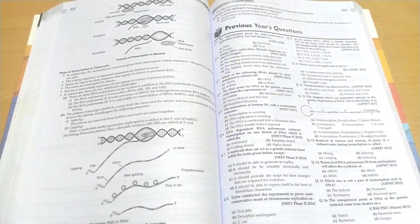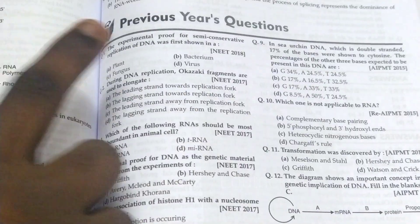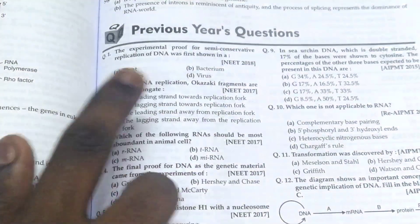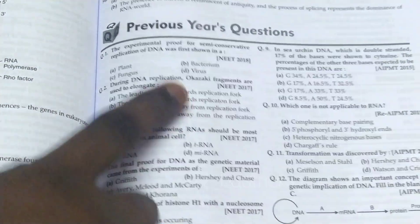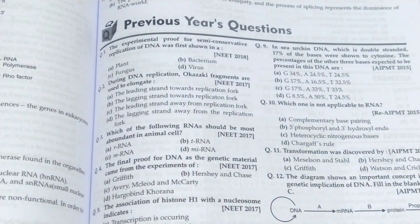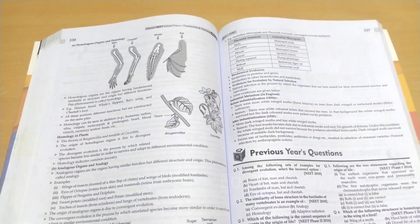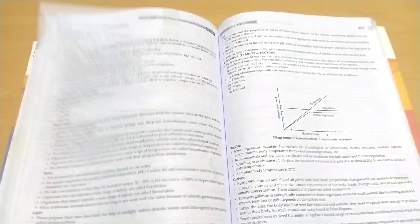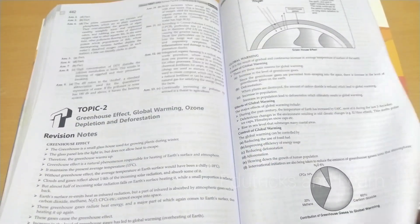You can clearly see the brief revision notes are given. It is very important to note that in previous year questions, they've given in which year this question was asked, like NEET 2018, NEET 2017. This batch mark is very useful if you are studying previous year questions.